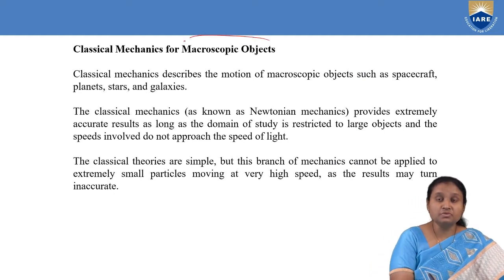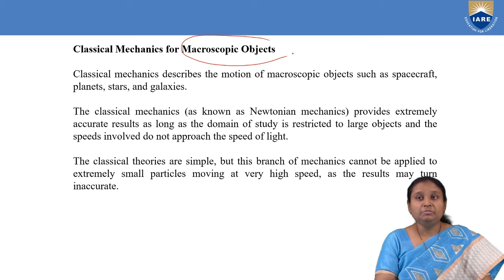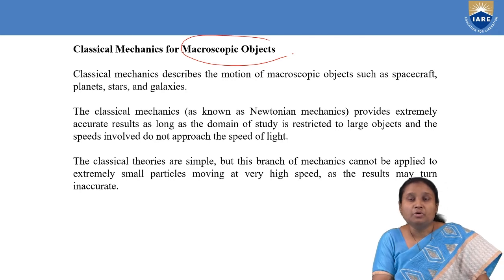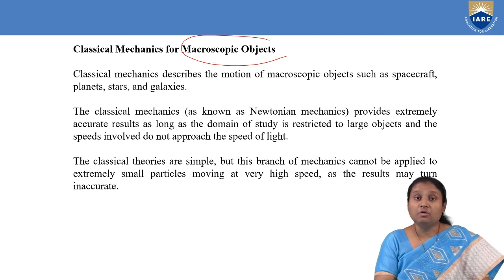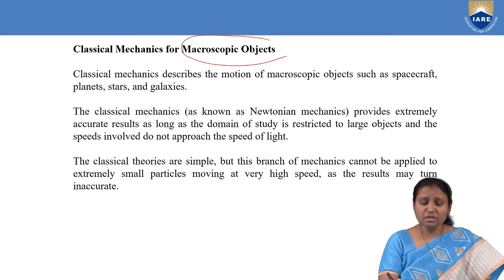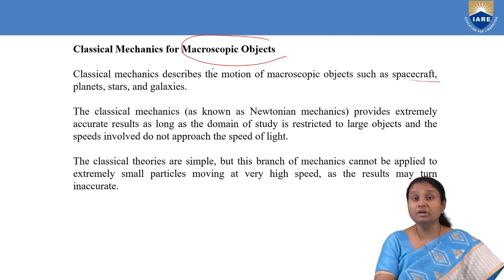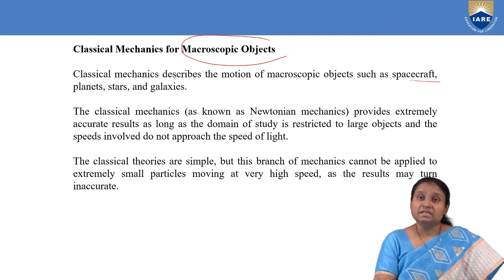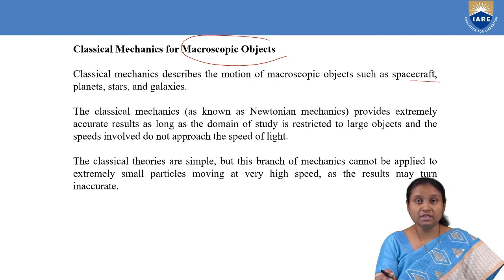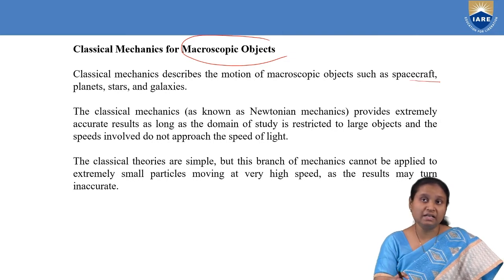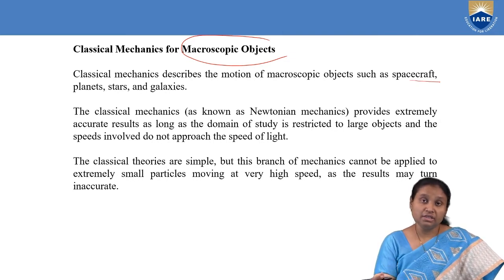Classical mechanics is applied for macroscopic objects — objects in bulk — such as spacecraft, planets, stars, and galaxies. It describes the non-relativistic motion of celestial bodies like planets, stars, and galaxies. So the objects we are dealing with in classical mechanics are macro-scale, or really huge bodies.